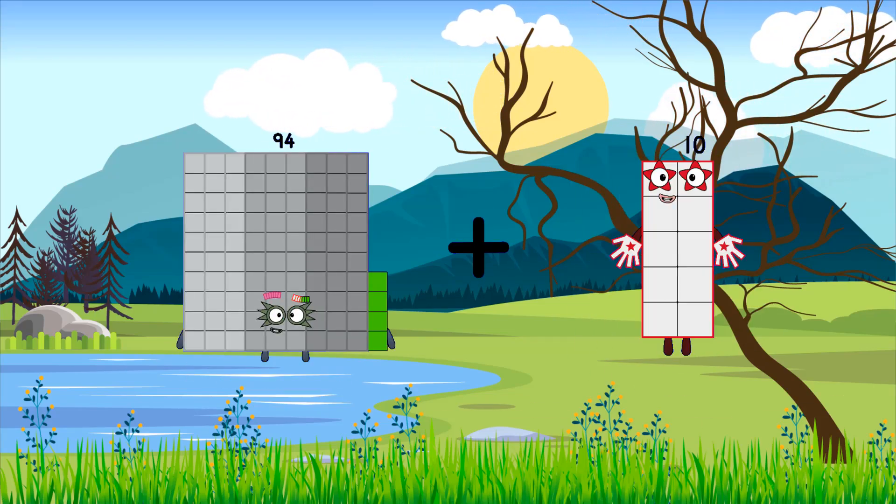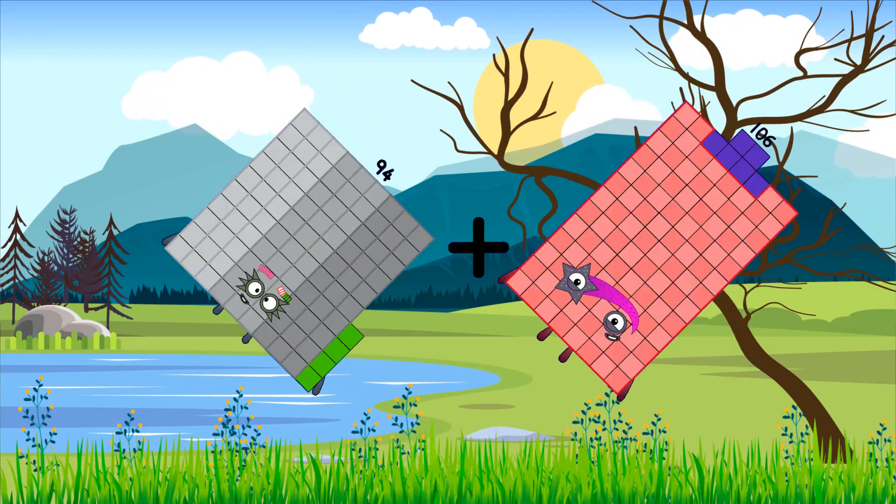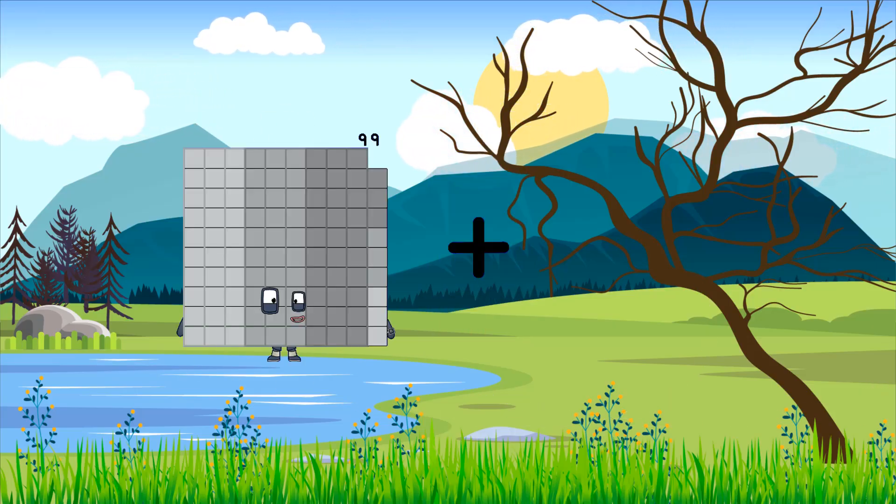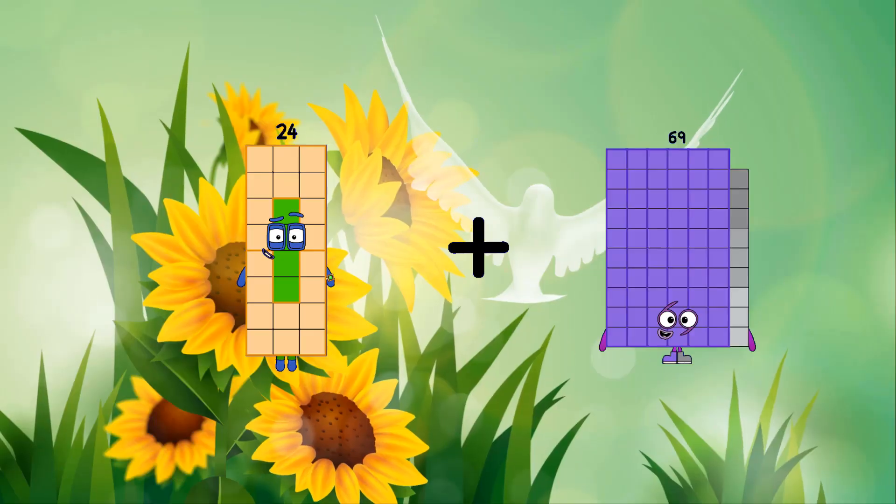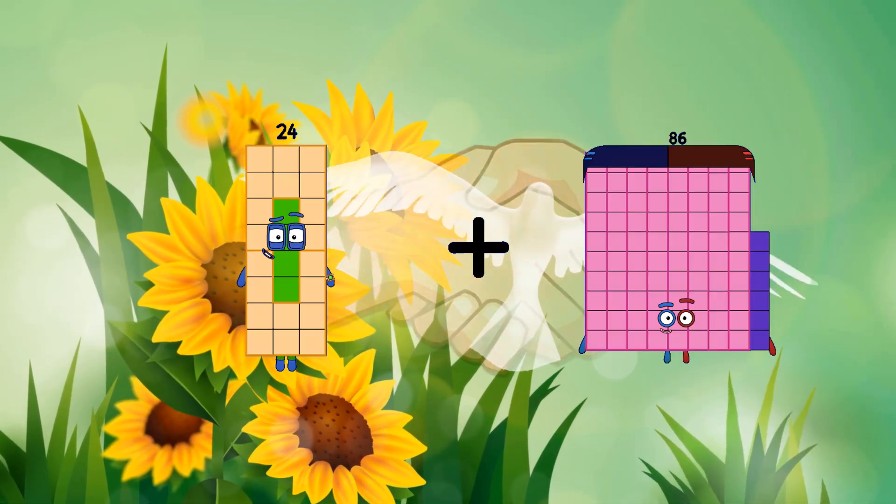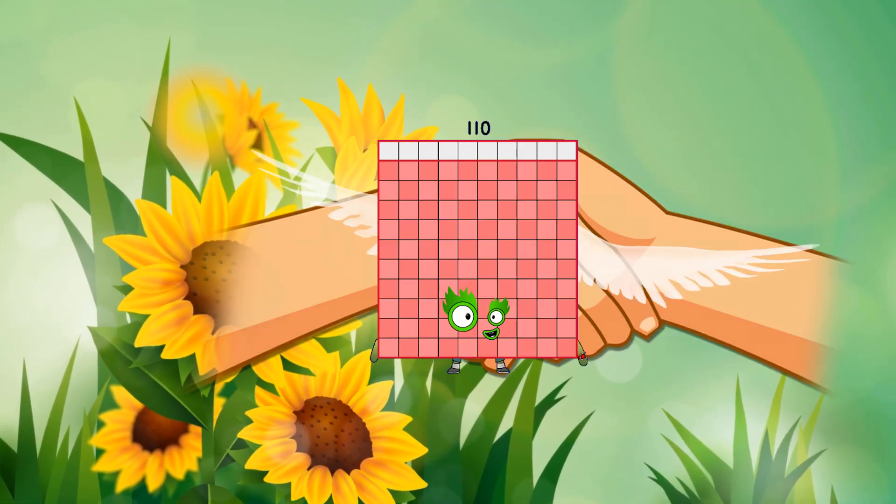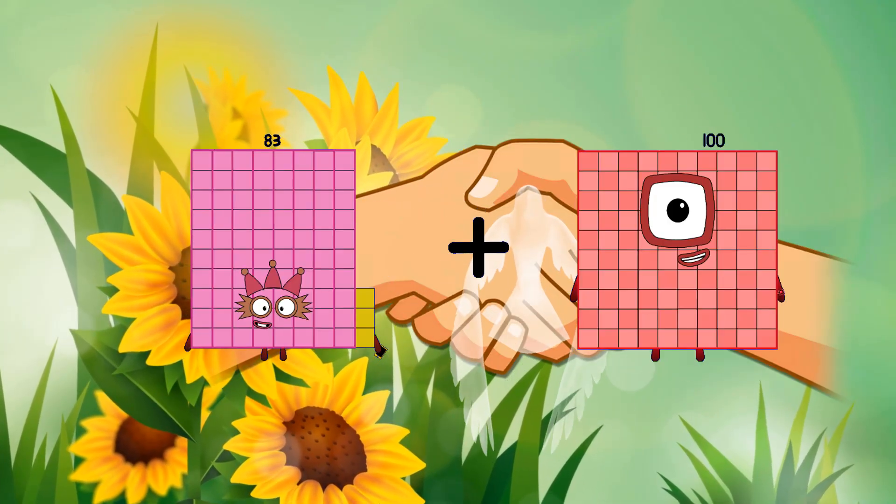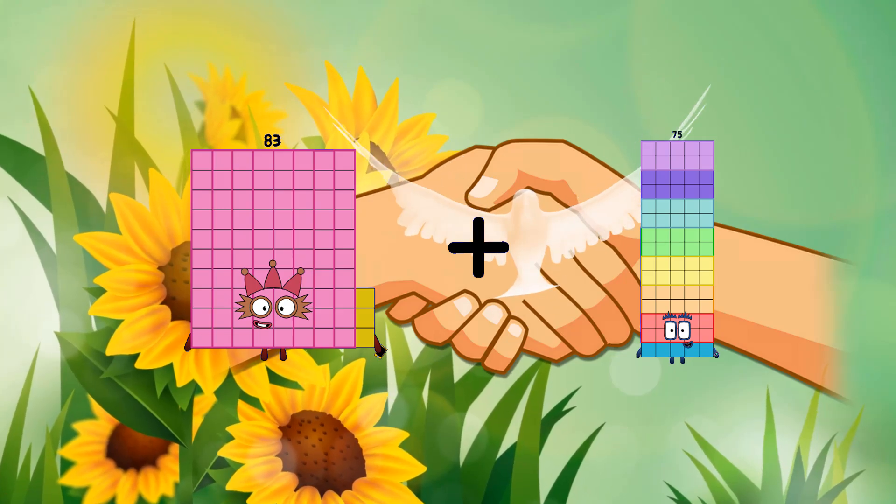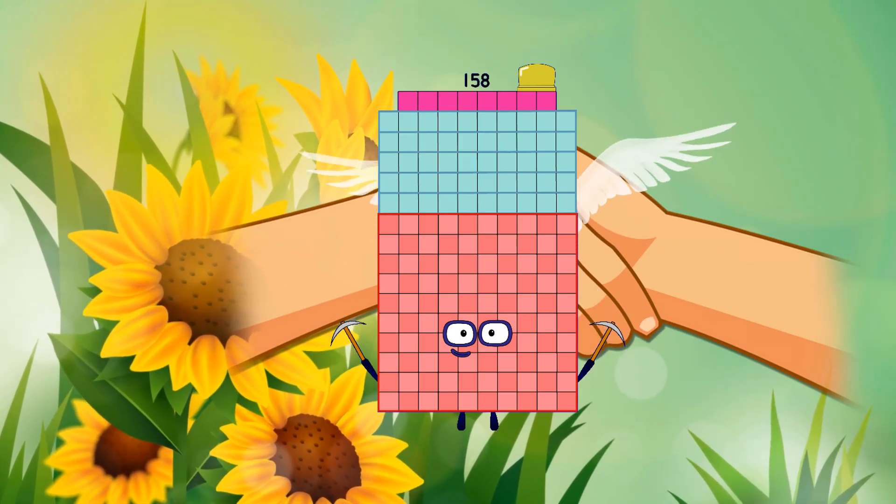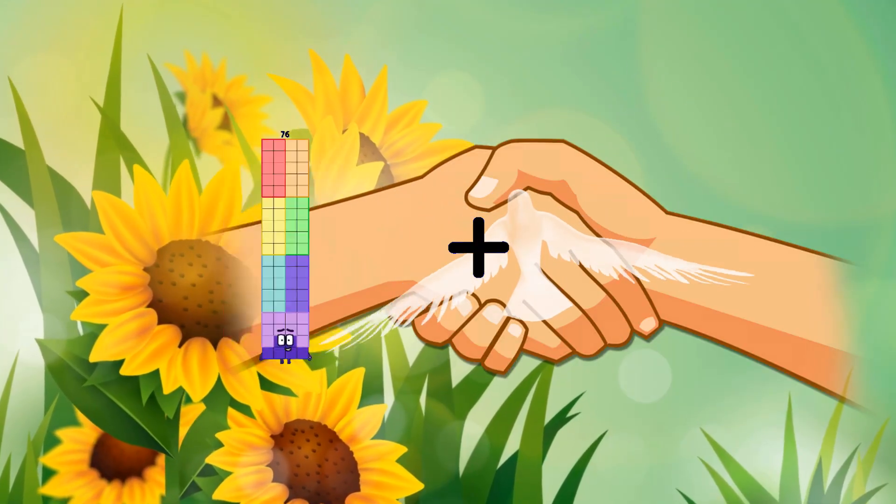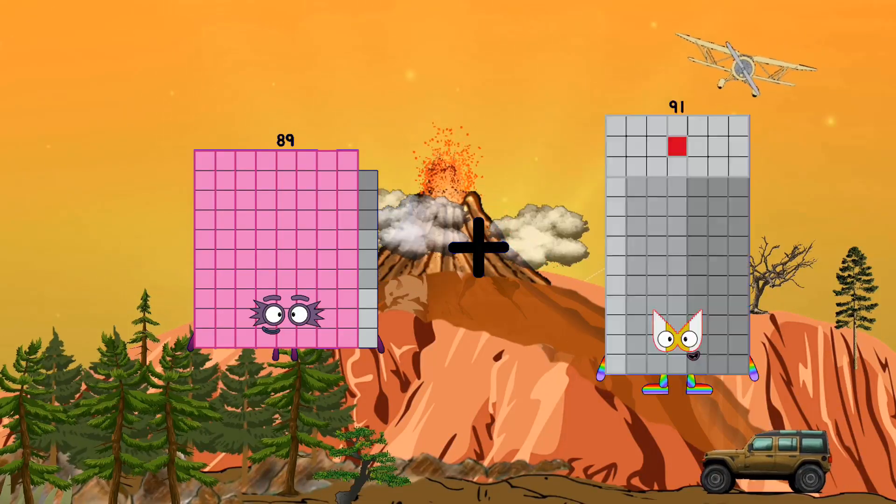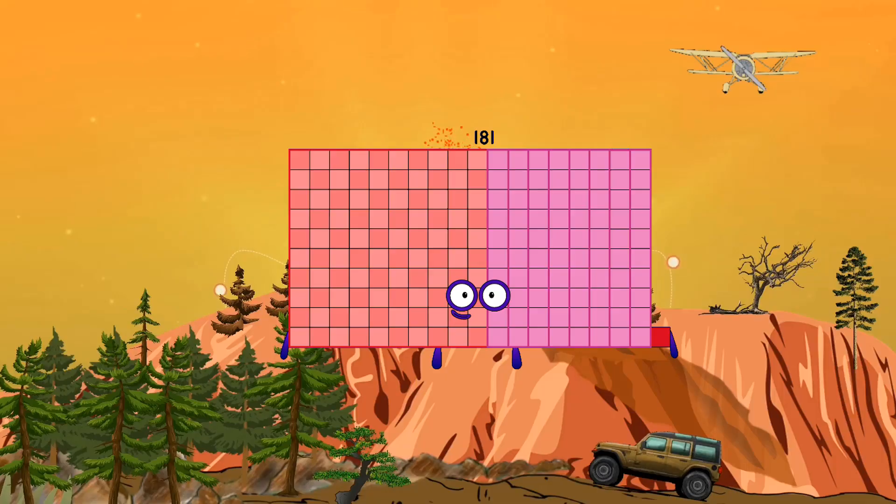94 plus 106 equals 200. 24 plus 86 equals 110. 83 plus 75 equals 158. 89 plus 92 equals 181.